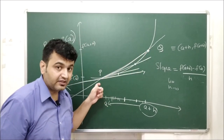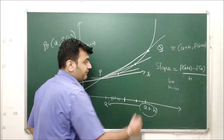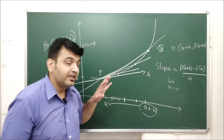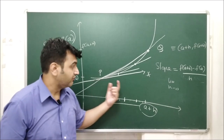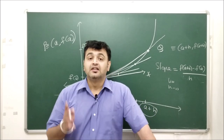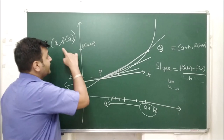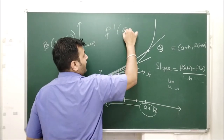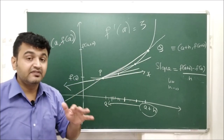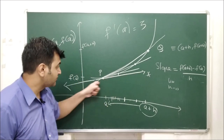As Q approaches P, this secant line becomes a tangent line — it passes through only the single point P, which is (a, f(a)). So when you take the limit h → 0, the secant line becomes the tangent line. The derivative is therefore nothing but the slope of this tangent line. If f'(a) = 3, then 3 is the slope of the tangent line at that point.